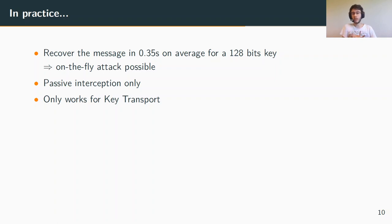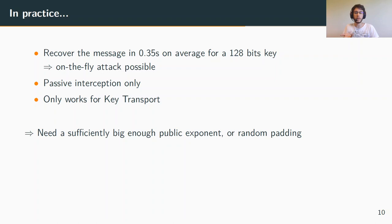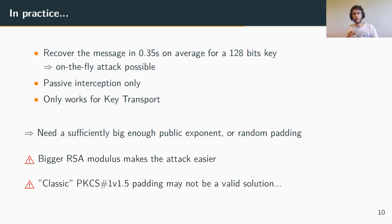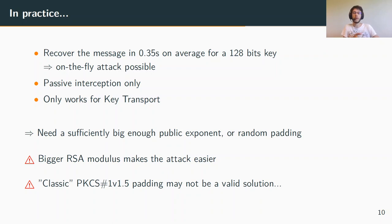Two mitigations are possible for this attack. First, we can mandate a sufficiently large public exponent. A better mitigation would be to use randomness in the padding as it should be done. However, we must be careful not to simply increase the RSA modulus size, since this would only make the attack easier by increasing the bound on the recoverable unknown part. We also must be careful about how we add randomness, because simply switching to classical PKCS#1 v1.5 padding may not be a valid solution.